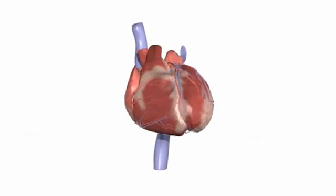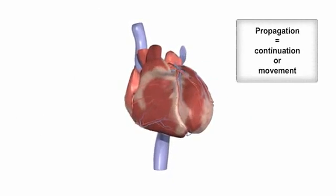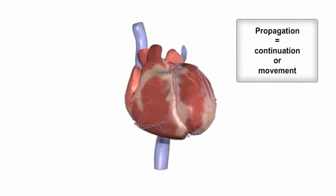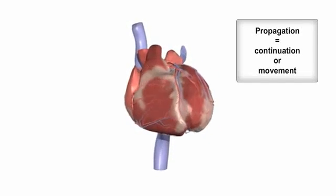The heart's conduction system controls the generation and propagation of electrical signals, or action potentials, that cause the heart's muscles to contract and the heart to pump blood.